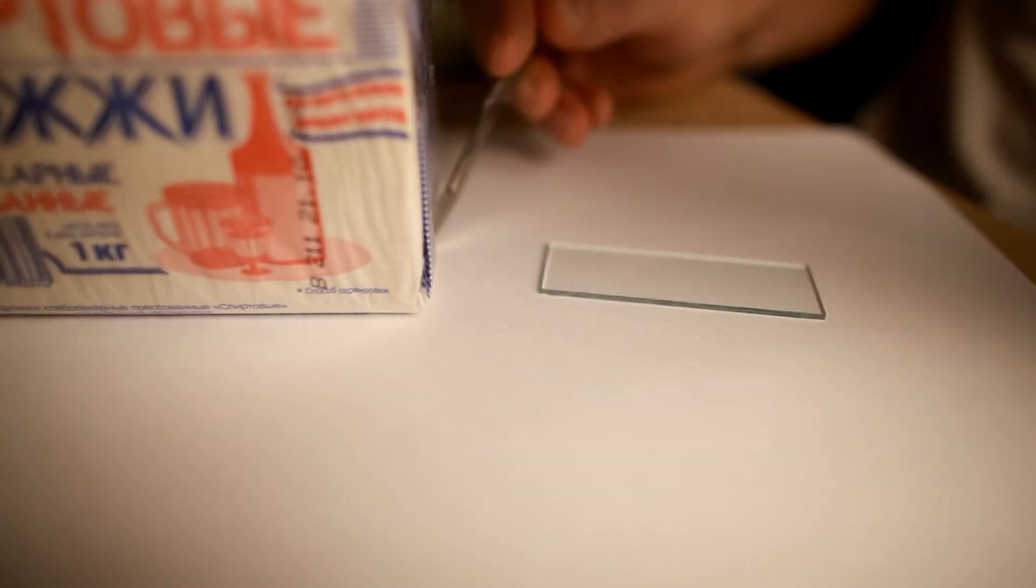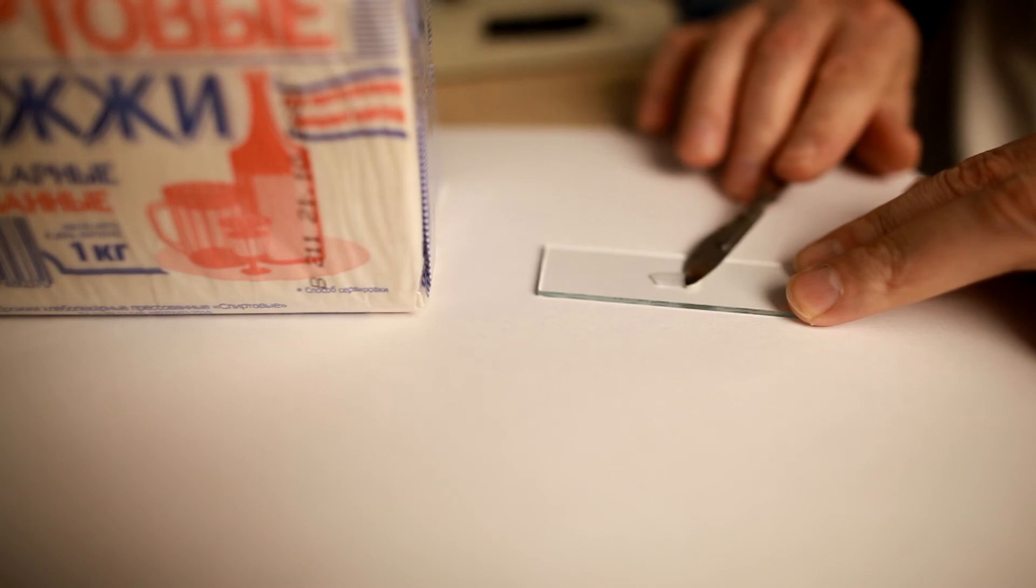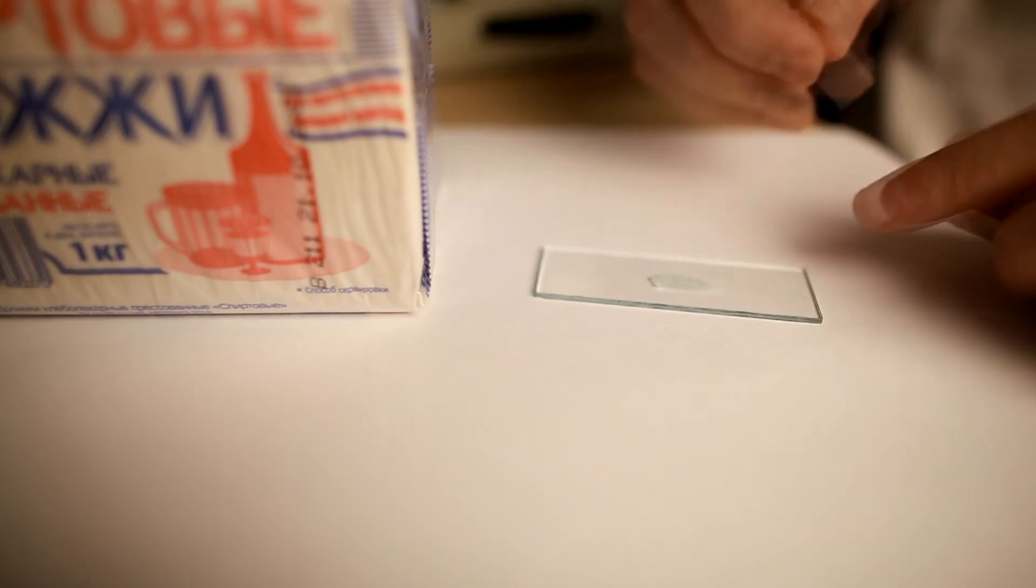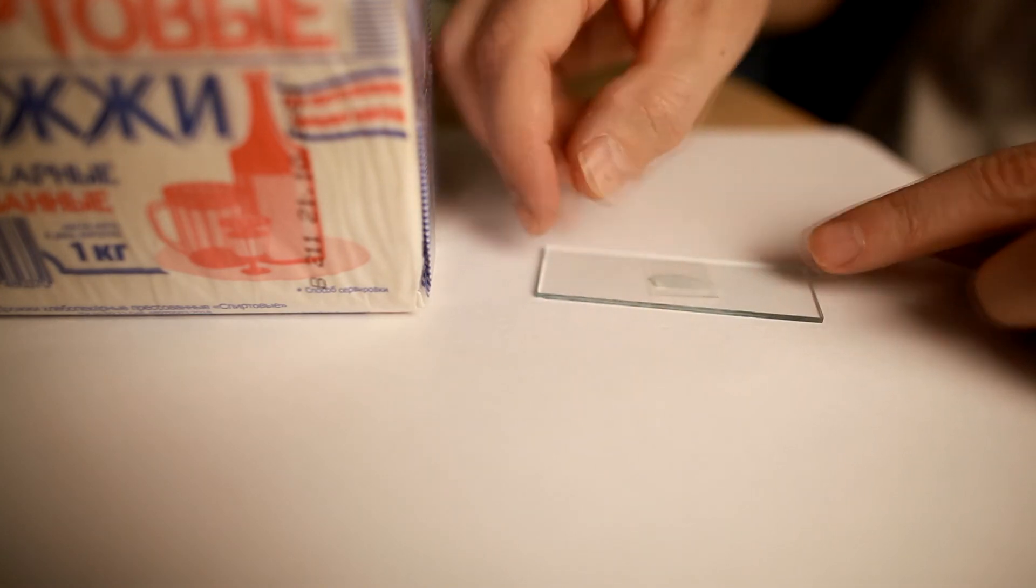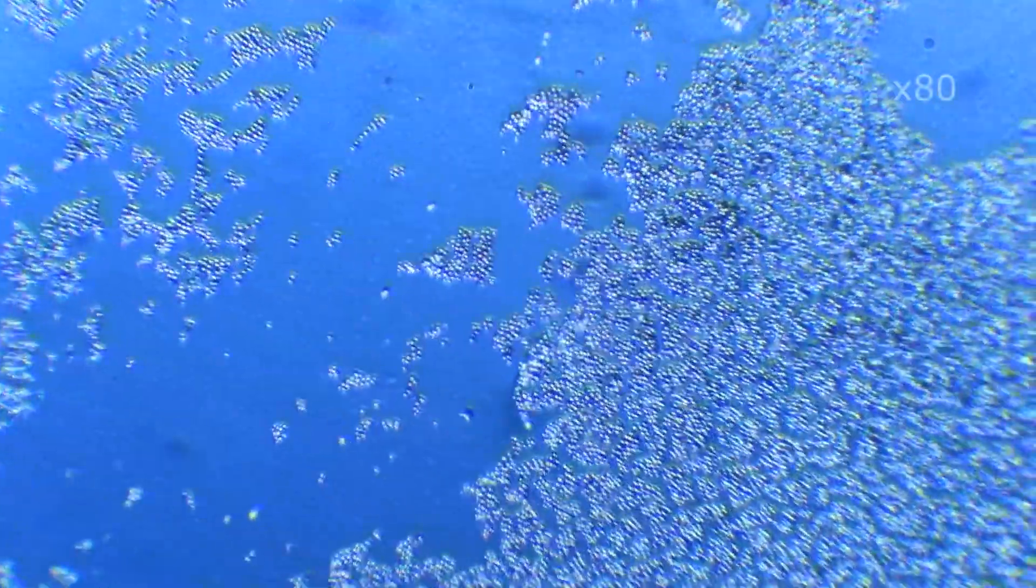We put a sample of alcoholic yeast on the glass and see that the yeast consists of cells.